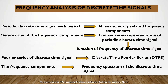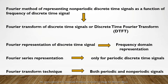The Fourier series of a discrete time signal is called the discrete time Fourier series, or DTFS. The frequency components are also called the frequency spectrum of the discrete time signal. The Fourier representation of a periodic discrete time signal has been extended to non-periodic signals by letting the fundamental period N tend to infinity, and this method is called the discrete time Fourier transform, or DTFT. The Fourier representation of a discrete time signal is known as the frequency domain representation.